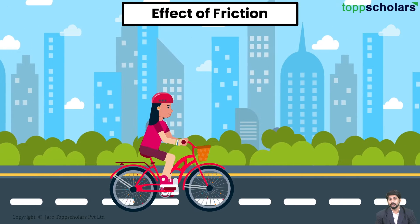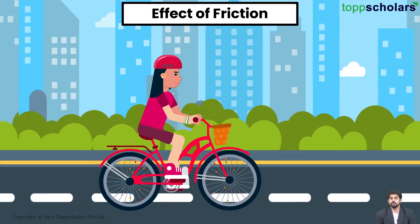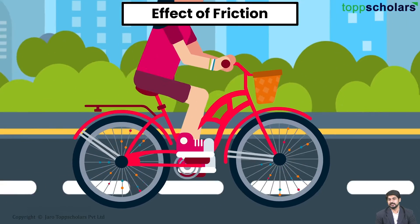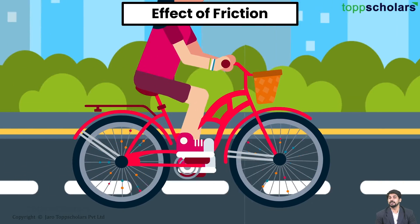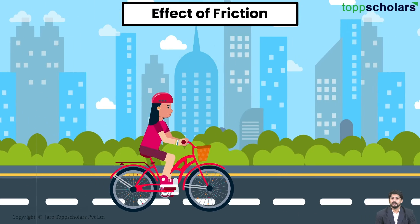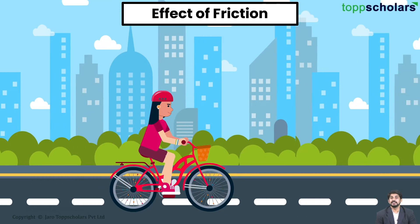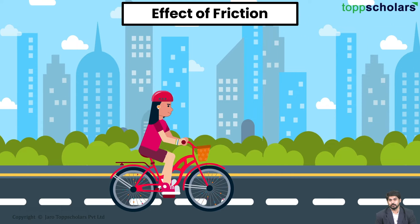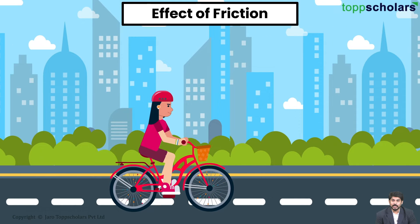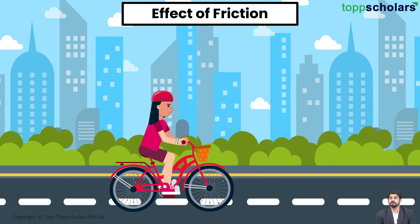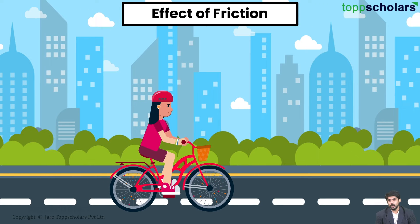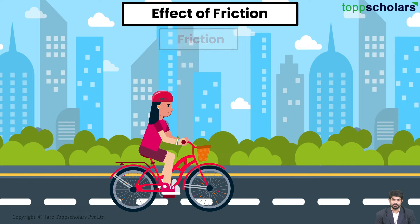While riding a bicycle on a road, you pedal the bicycle and it moves on and on. When you stop pedaling, the bicycle slows down and gradually comes to a stop. Why does this happen?